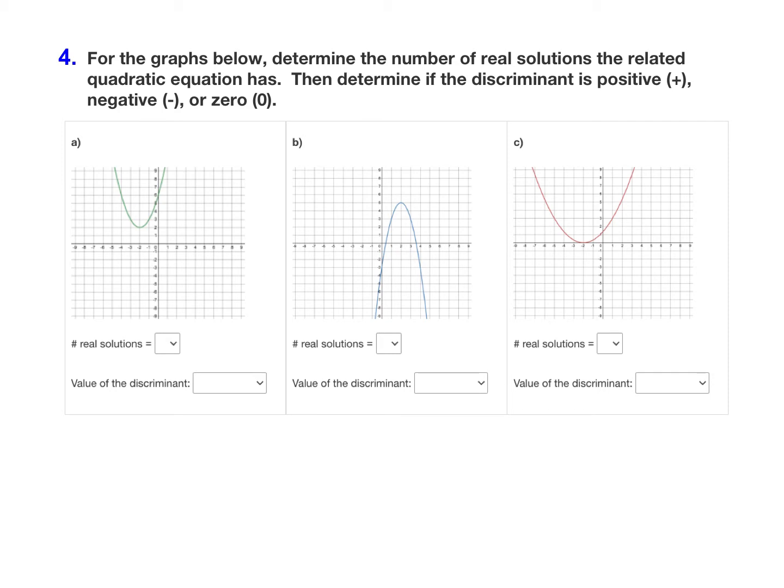Recall that when you have a graph, the solutions are the x-intercepts of the graph. So where does the graph cross the x-axis?